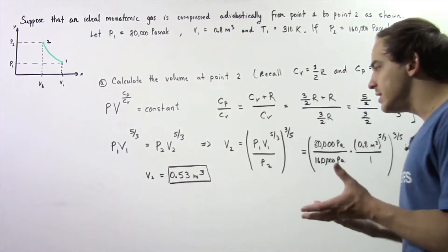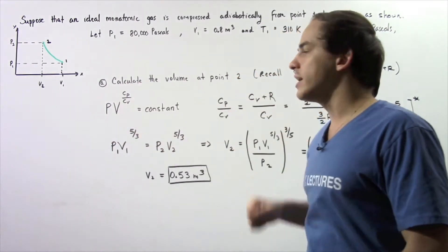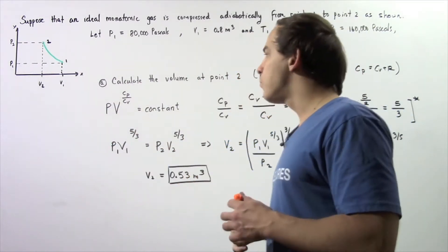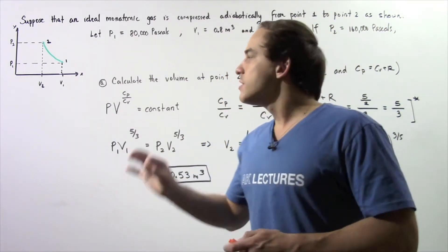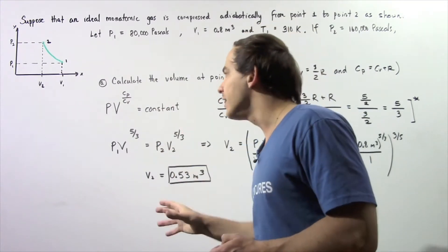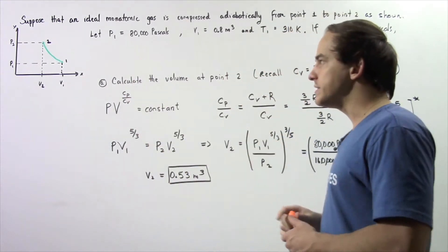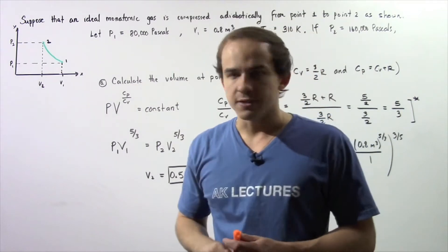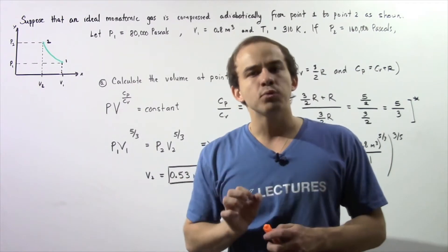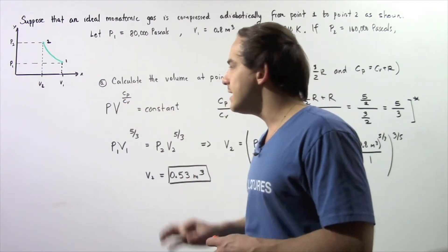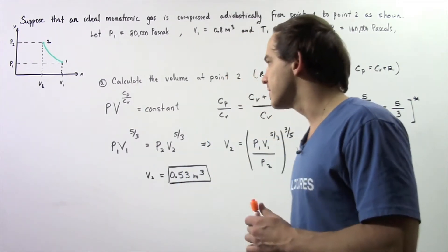Because we're dealing with a slow and adiabatic process, we can use the following equation to calculate the volume at point 2. This equation states that the product of the pressure and the volume raised to this ratio at any point during our adiabatic and slow expansion is equal to a constant. CP is simply the molar specific heat when the pressure is constant, and CV is the molar specific heat of our ideal gas when the volume is constant.